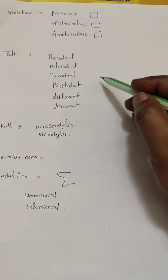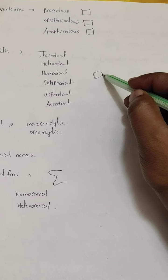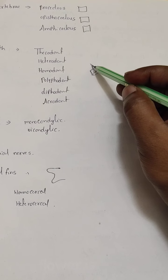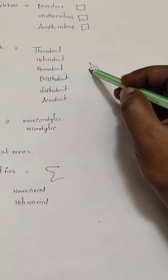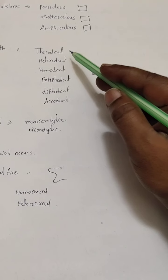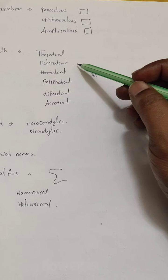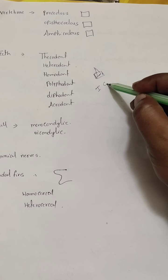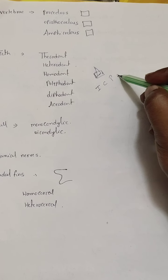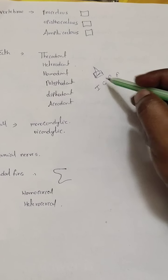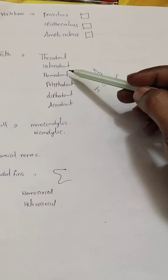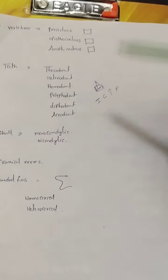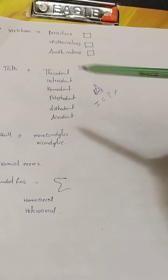For teeth types: thecodont teeth are teeth present in the socket of the jaw. Heterodont teeth means different types of teeth are present — for example, incisors, canines, premolars, and molars. Homodont teeth means all teeth are the same type; if the organism has incisors, all are incisors; if canines, all are canines.